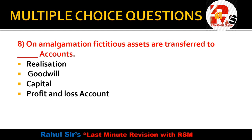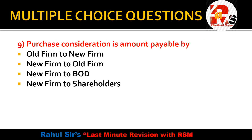Question 8: on amalgamation, fictitious assets are transferred to which account — realization, goodwill, capital, or profit and loss account? As discussed in the previous question, fictitious assets go to the capital account — specifically to the debit side of the capital account. If it were a reserve, it would go to the credit side of the capital account.